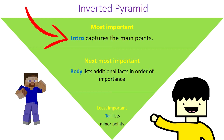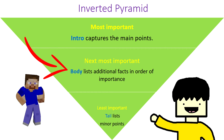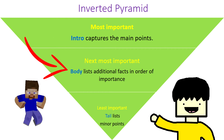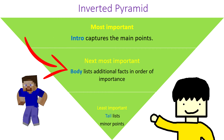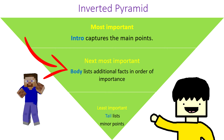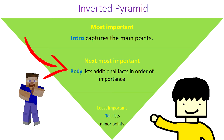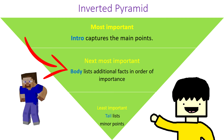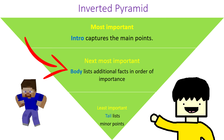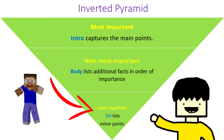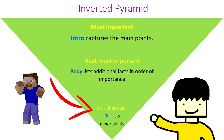As you move down toward the middle, you have to put the important details to build anticipation — the body. This is also where you put the nut graph. The nut graph builds more context to the story; it sets the tone and direction of the story.